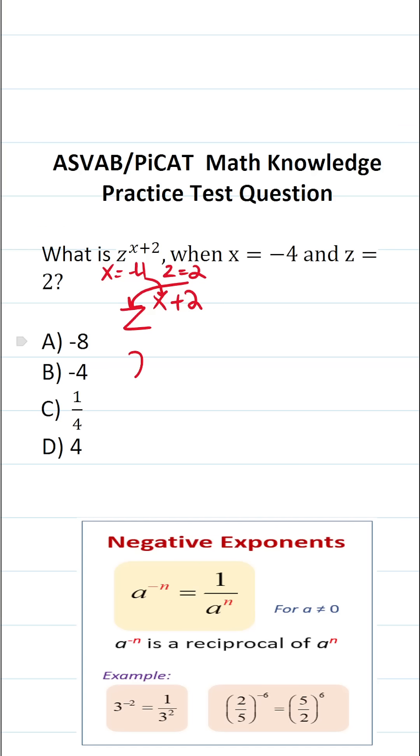This becomes 2 to the x is negative 4, so this is negative 4 plus 2 power. Negative 4 plus 2 is going to be negative 2. So this becomes 2 to the negative 2 power.